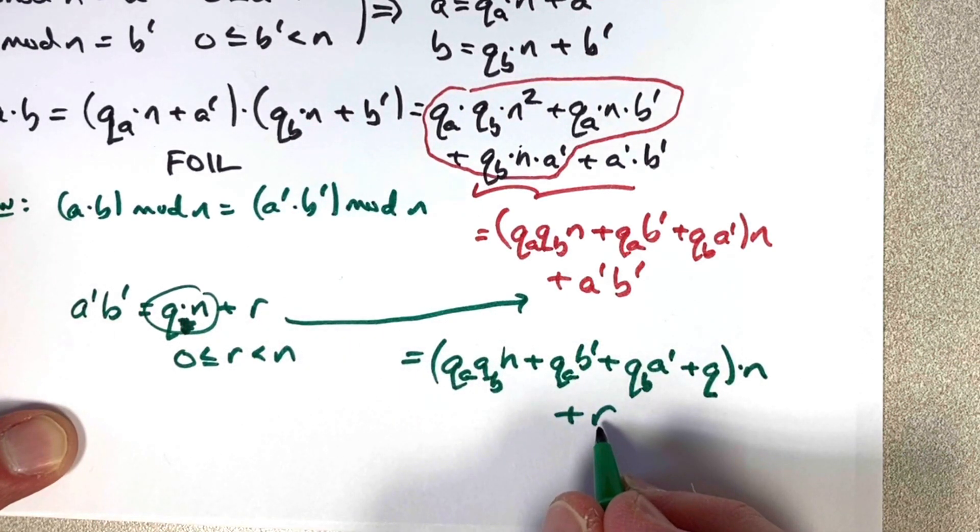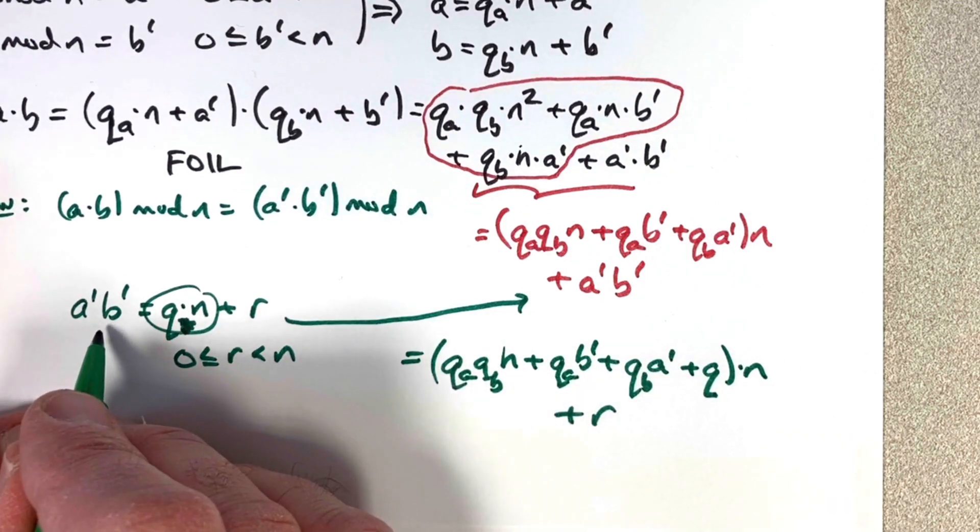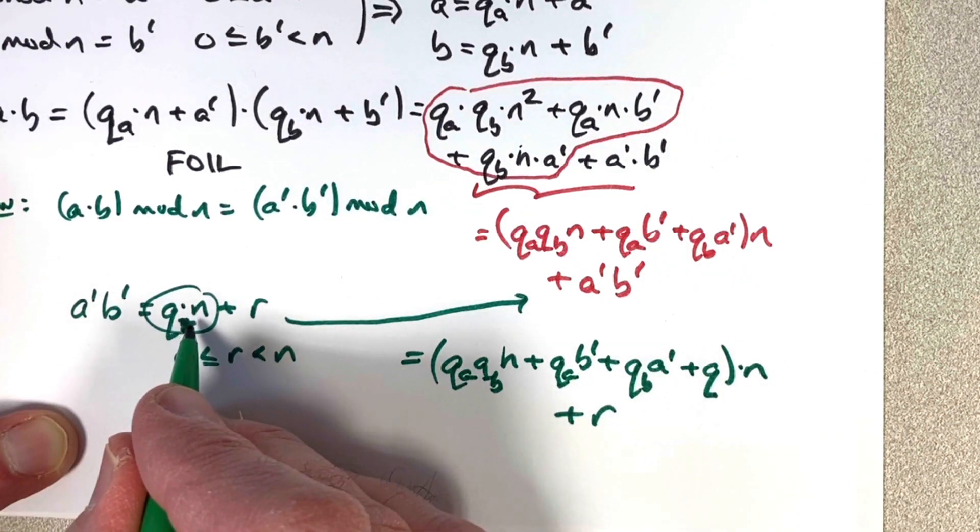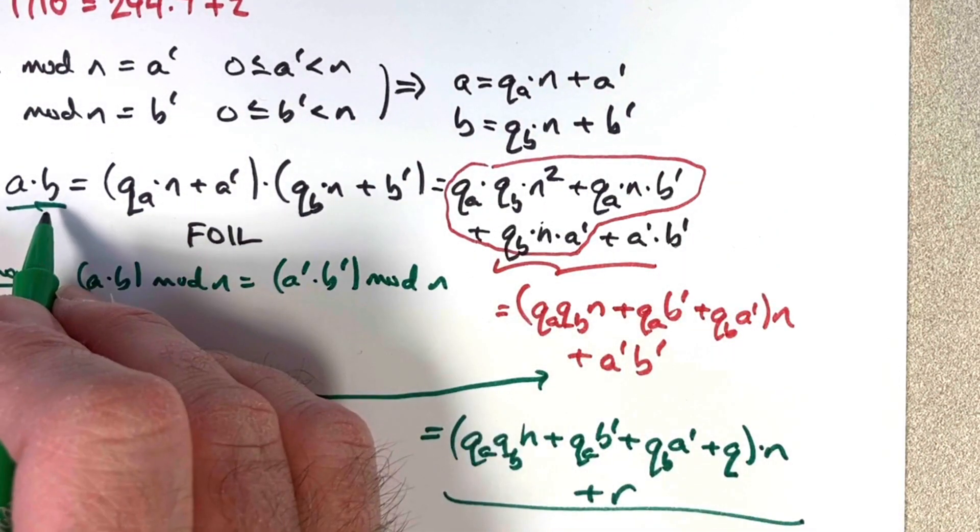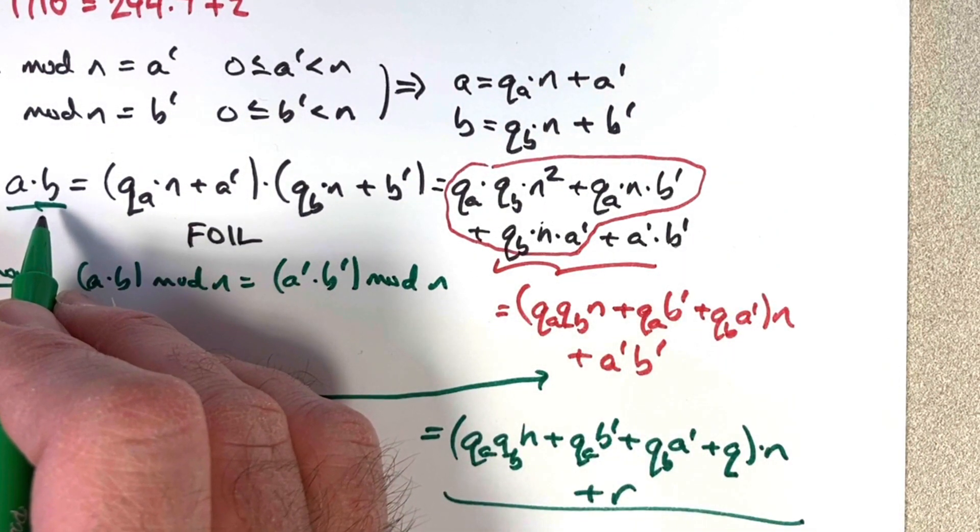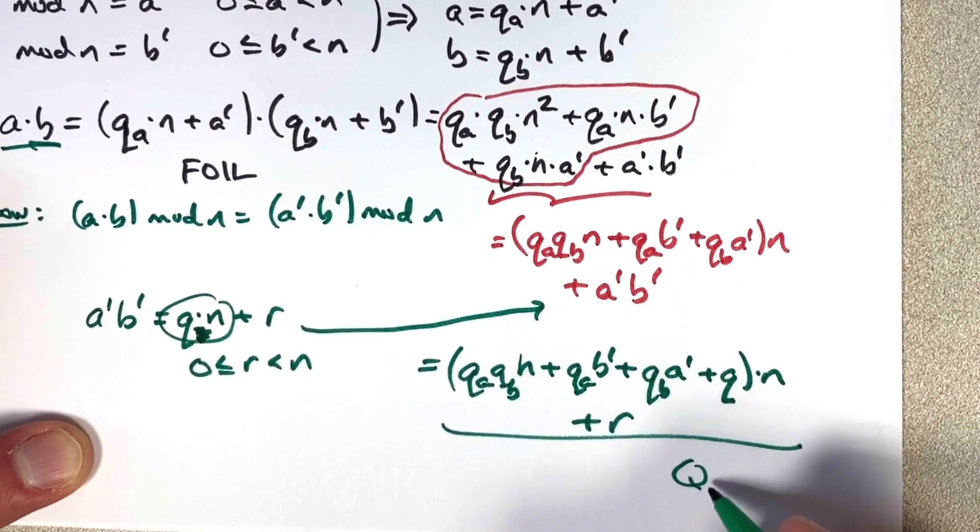R is guaranteed to be in this range. It will be the remainder, both in dividing a prime times b prime by n and also, because of the equality of this with this, in dividing a times b by n. And that's the proof. We're done. Q E D. Thanks for watching.